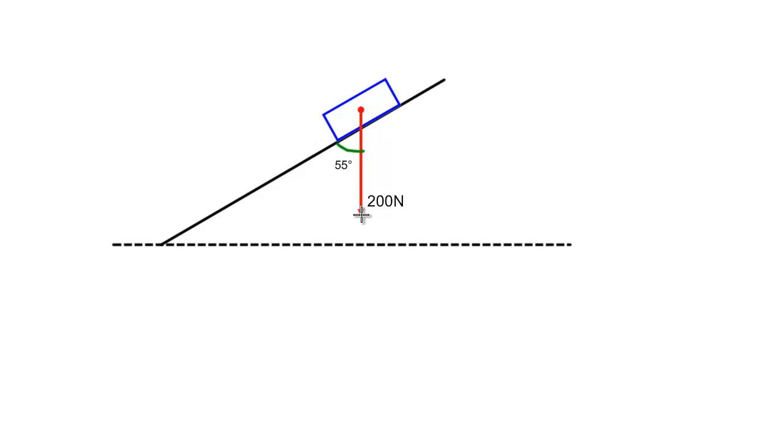In this example here, we have a vector acting vertically downwards. This is the weight of a box resting on a slope, but because it is a weight, it must be acting vertically. The angle between the slope and the direction of this vector is 55 degrees.